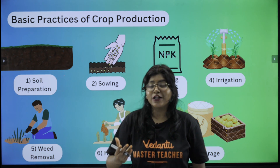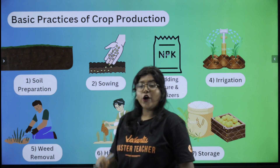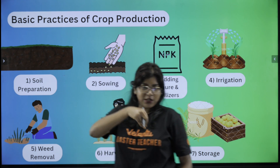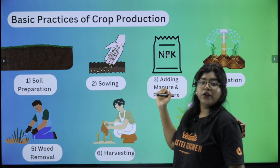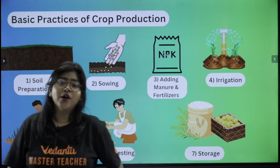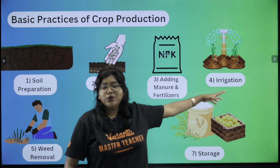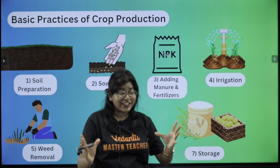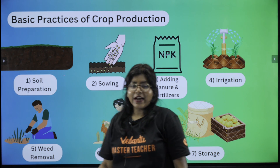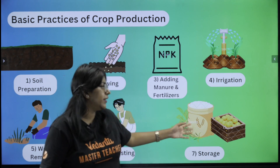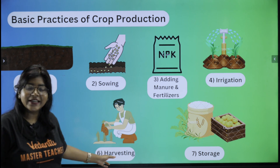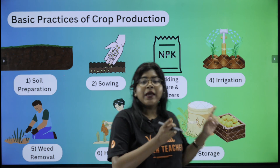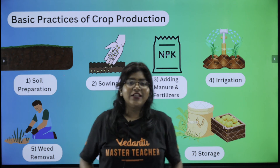The basic steps of crop production: the first thing is we prepare the soil, and the second one is sowing. Then we add manure and fertilizers. Then we add irrigation. We have weed removal and then we have harvesting, and then we move into storage. But now our prime focus will be on irrigation.